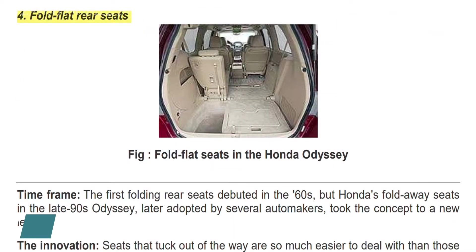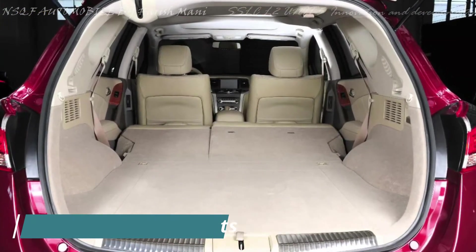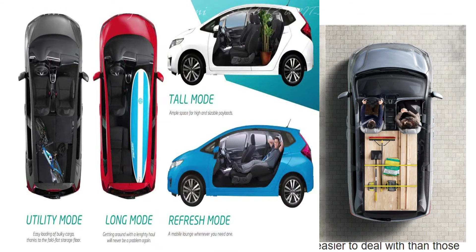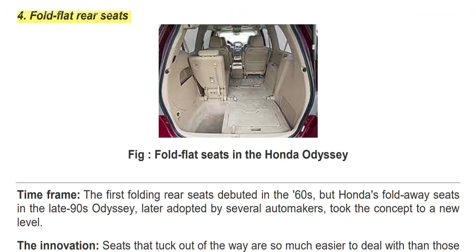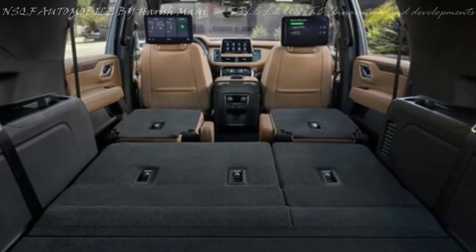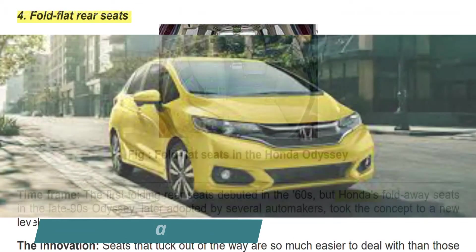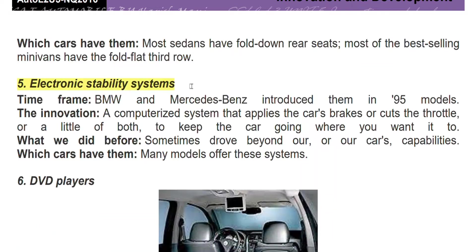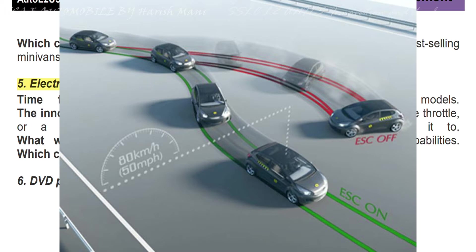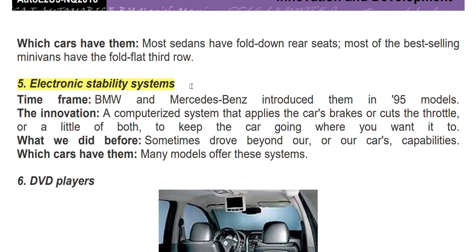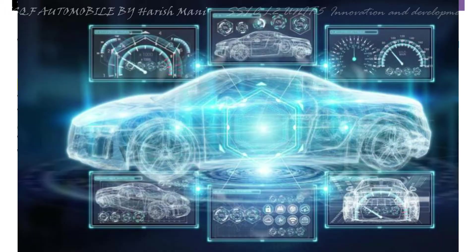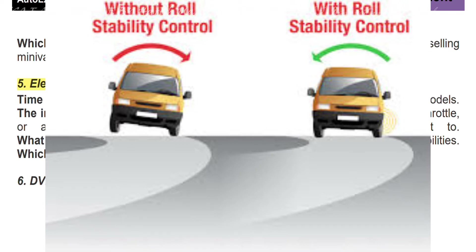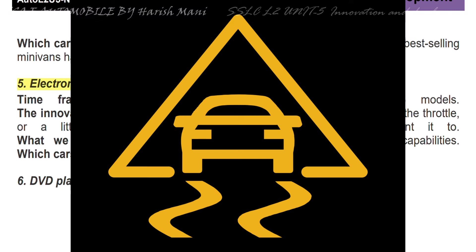The fourth innovation is Fold Flat Rear Seats. This feature was first introduced by the Honda company. Next is the Electronic Stability System — it is a computerized system. If you need to control or maintain stability, this computerized system is helpful. It applies the brakes or the throttle to assist control.